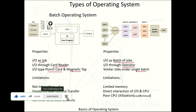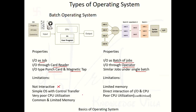The earlier system was not interactive — and the Batch System is also not interactive, so this limitation is not overcome. The OS with control transfer is the same — that is also not overcome. In terms of CPU utilization, we are able to improve it slightly: it is still poor in the batch system, but better than the earlier system. Common and limited memory — the same thing applies to the Batch System.